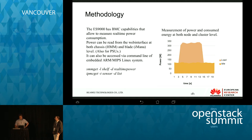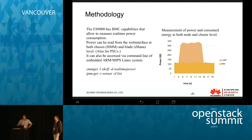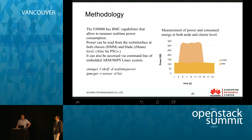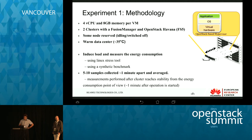When you measure a workload, you get a graph showing idle power — in this case one node fluctuating around 116 watts. Once you start fully loading your system, the power consumption goes up. To measure the energy consumed, you take the area under this graph — the integral of power over time. We scheduled virtual machines with four CPUs and eight gigabytes of memory using two clusters. Note that we didn't use all nodes — some were switched off, some reserved for another project.